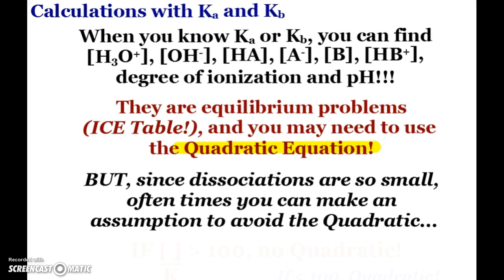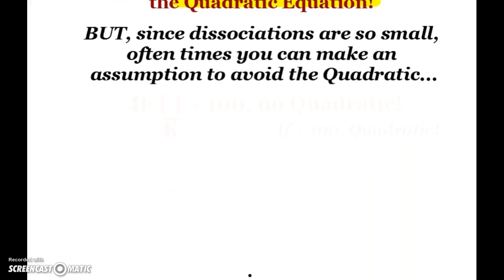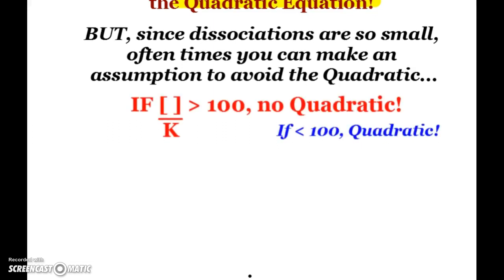You may need to use the quadratic. But since our dissociations are so small with our weak acids and bases, we can oftentimes assume that we don't need to use the quadratic. And how do you check if your original concentration of your acid or base divided by your Ka or Kb is greater than 100, then no quadratic would be needed. Because plugging into that x value, it's not going to affect our answer when we use sig figs. And most of our K values are smaller than that.